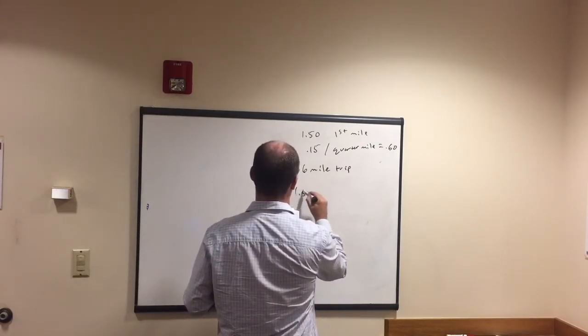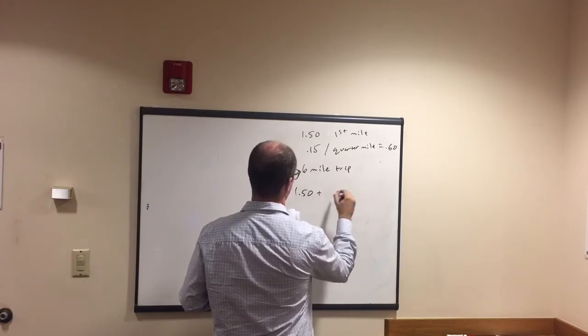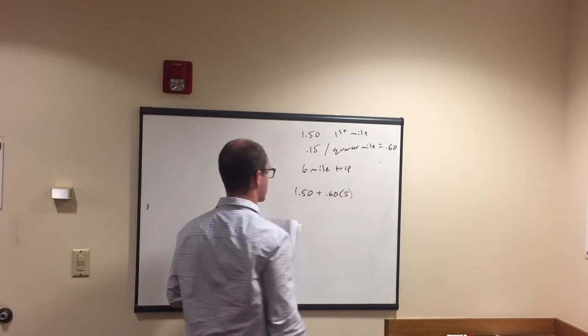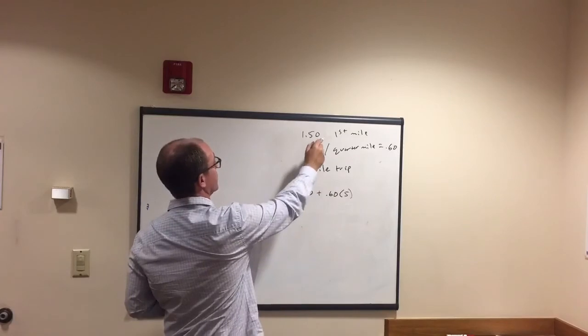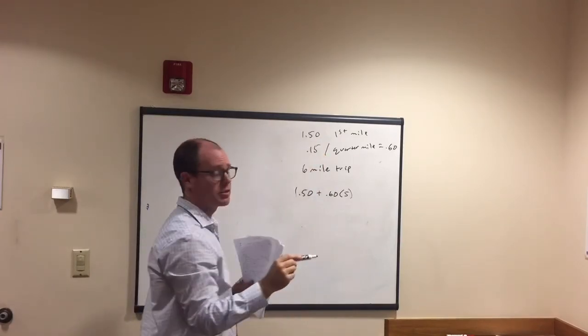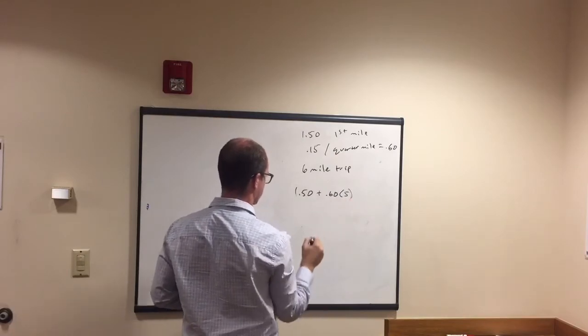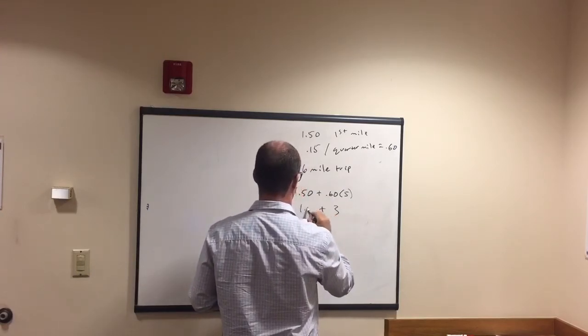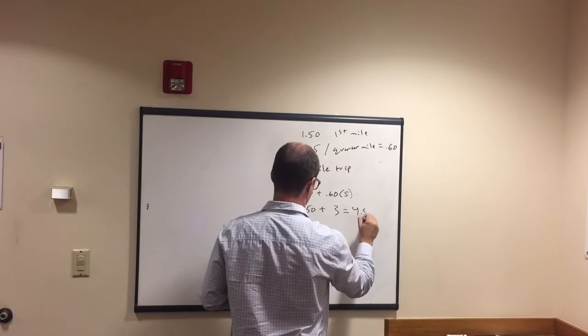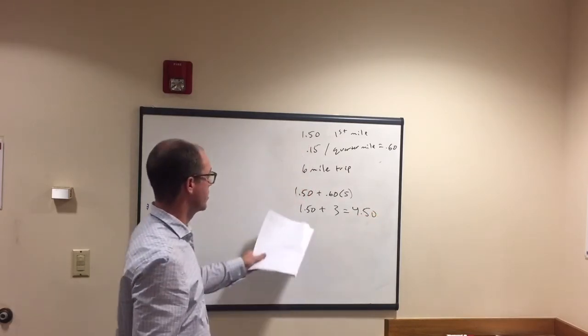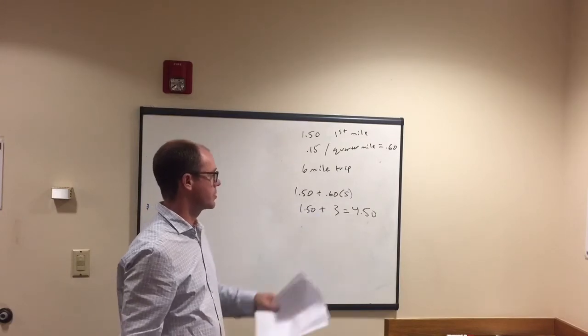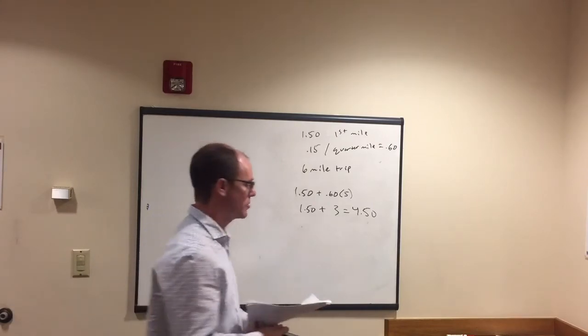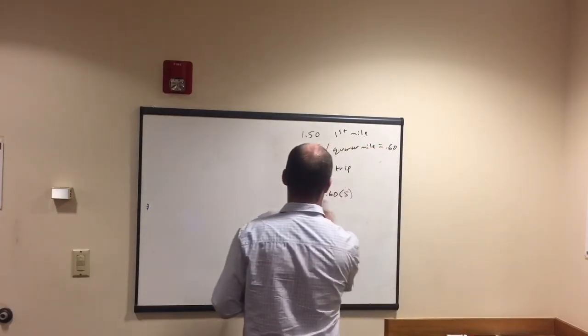So now we have, it was $1.50 for the first mile. Plus, now we have $0.60. And how many miles are left? Five, right? And then we solve, because the six mile trip total, we paid $1.50 for that first mile. We've got five miles left. $0.60 per mile. So $0.60 times five is three. So, pull down this $1.50 that first mile. It was $3 for the next five miles. $4.50 total. So those are some cost questions. Those are kind of questions that you'll see on the exam.